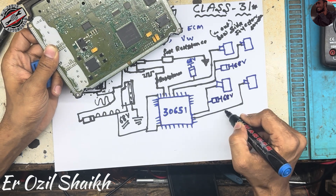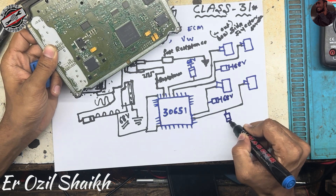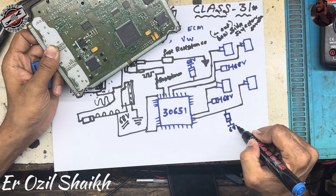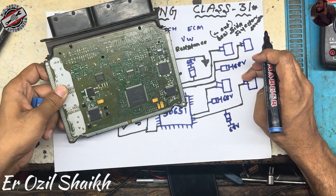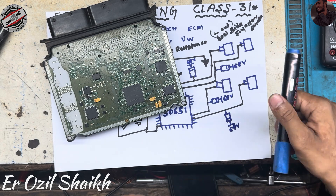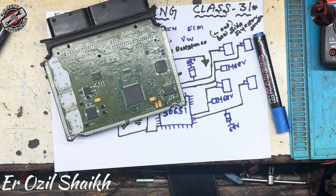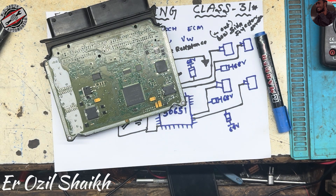Why are reverse-biased diodes used? They are used for protection — if there is a short circuit outside the ECU, it will not damage other components; it will complete the circuit safely without damaging the rest.